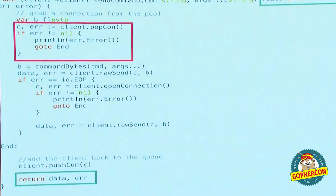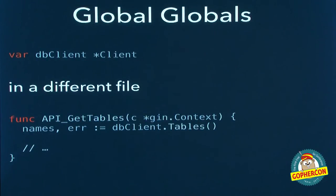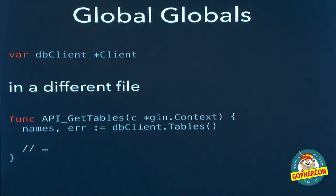Another thing that bothers me: global variables used across lots of your files. It happens a lot with database clients — you want to open a client and have it accessible everywhere. But when I read that inside some other part of the package, I don't know where it's coming from. If you need a database connection on a struct, use the struct. If you need a database connection in a function, send a pointer to the database connection in your function arguments.